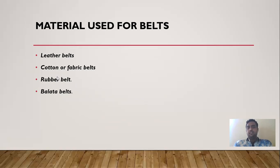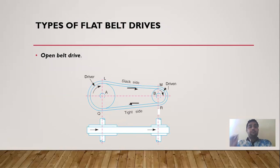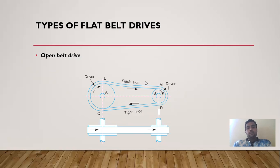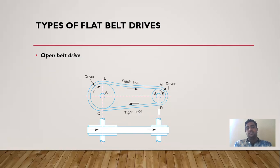Types of belt material include leather, cotton or fabric, rubber, and balata belts. Rubber and leather belts are most commonly used in industry. Regarding types of belt drive arrangements: in an open belt drive, there is a driver pulley and a driven pulley. The side of the belt where power is transmitted is called the slack side and the other is called the tight side.